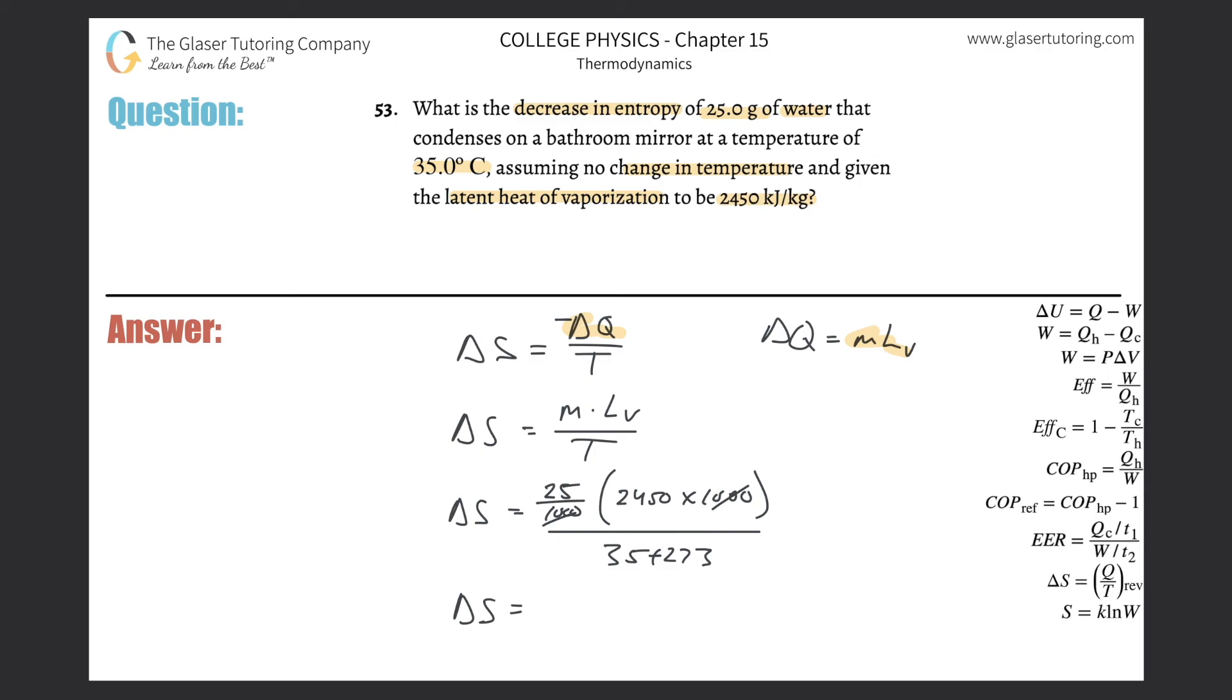This works out to be an entropy change, a loss basically—there's a negative sign I could have carried all the way down—and this is 199 joules per Kelvin. That is that.